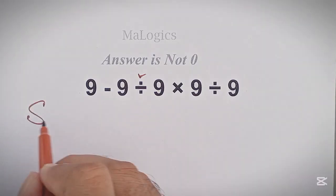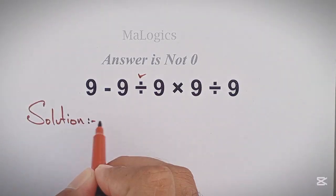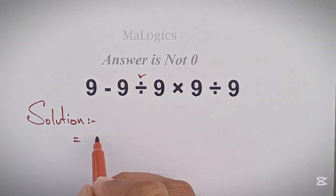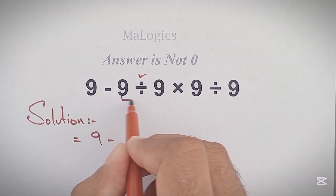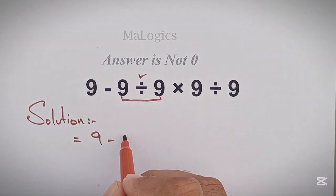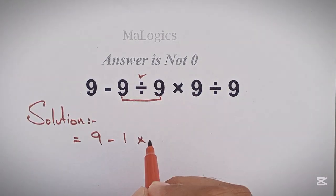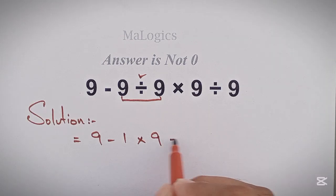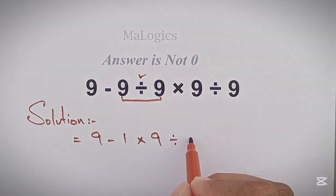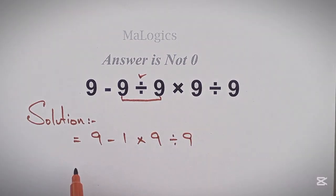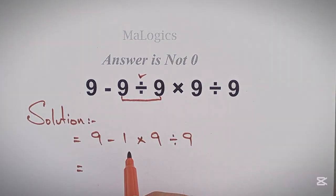Let's start with its solution. 9 minus — here 9 divided by 9 equals 1 — times 9 divided by 9. Here we do multiplication first, then division.